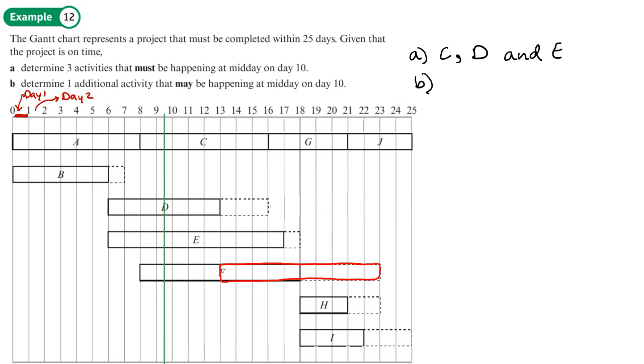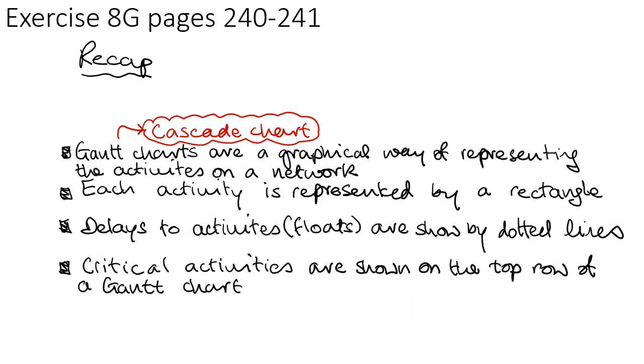And in part B, what we need to do is determine one additional activity that may be happening at midday on day 10. And that is this activity F. It may happen. It doesn't have to happen. So that is just F. Activity F may be happening at midday on day 10. So you should now be able to complete exercise 8G on pages 240 to 241.